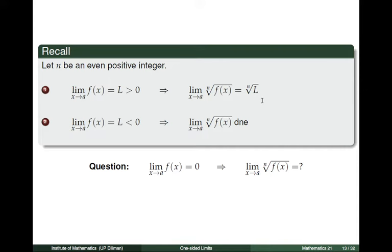On the other hand, when the limit l is negative, then the limit of the nth root of f as x tends to a does not exist. Now, the number l can be positive, can be negative, but it can also be equal to 0. What happens when precisely the limit of f of x as x tends to a is equal to 0? What can we say about the limit of the nth root of f of x as x tends to a when the index of the radical is an even integer?